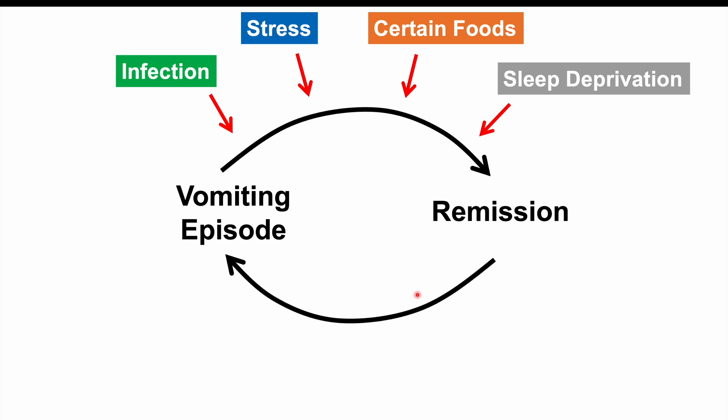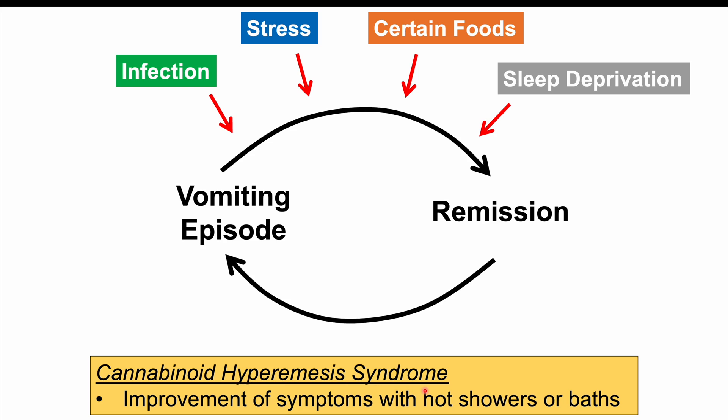Regarding cannabinoid hyperemesis syndrome, patients have cyclical episodes of vomiting, and symptoms can be improved with hot showers and baths. Patients often take prolonged hot showers and baths to help resolve their symptoms — a distinguishing feature that will be covered in a dedicated lesson on that condition.